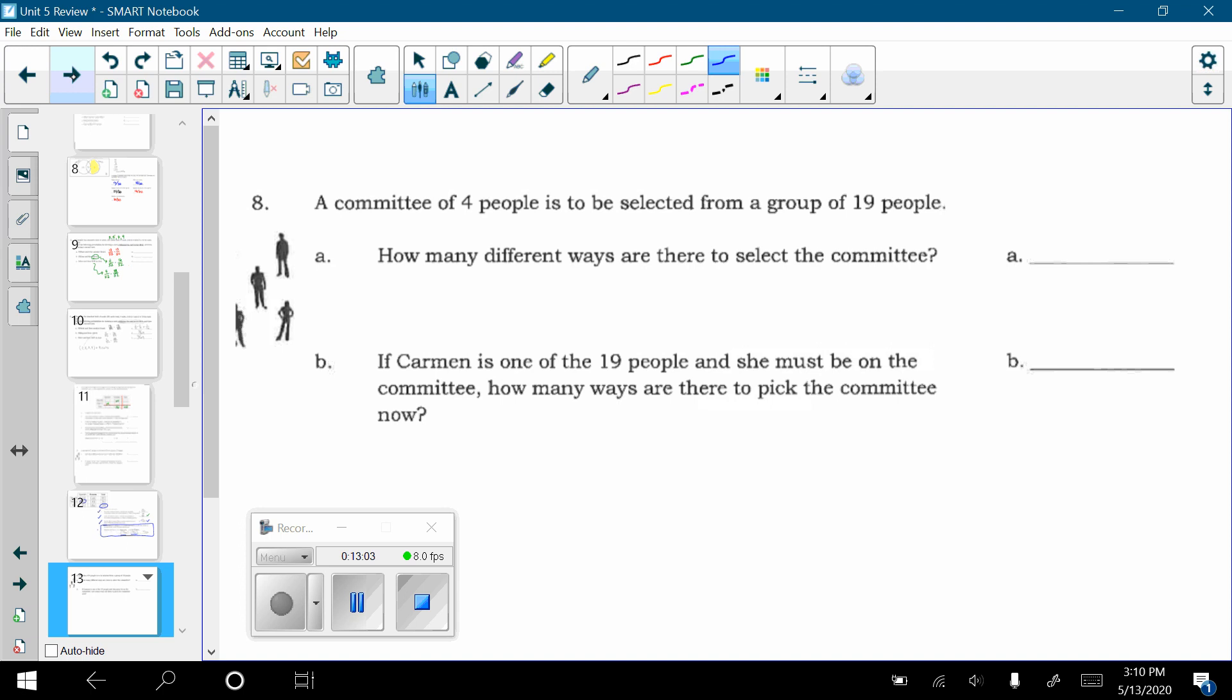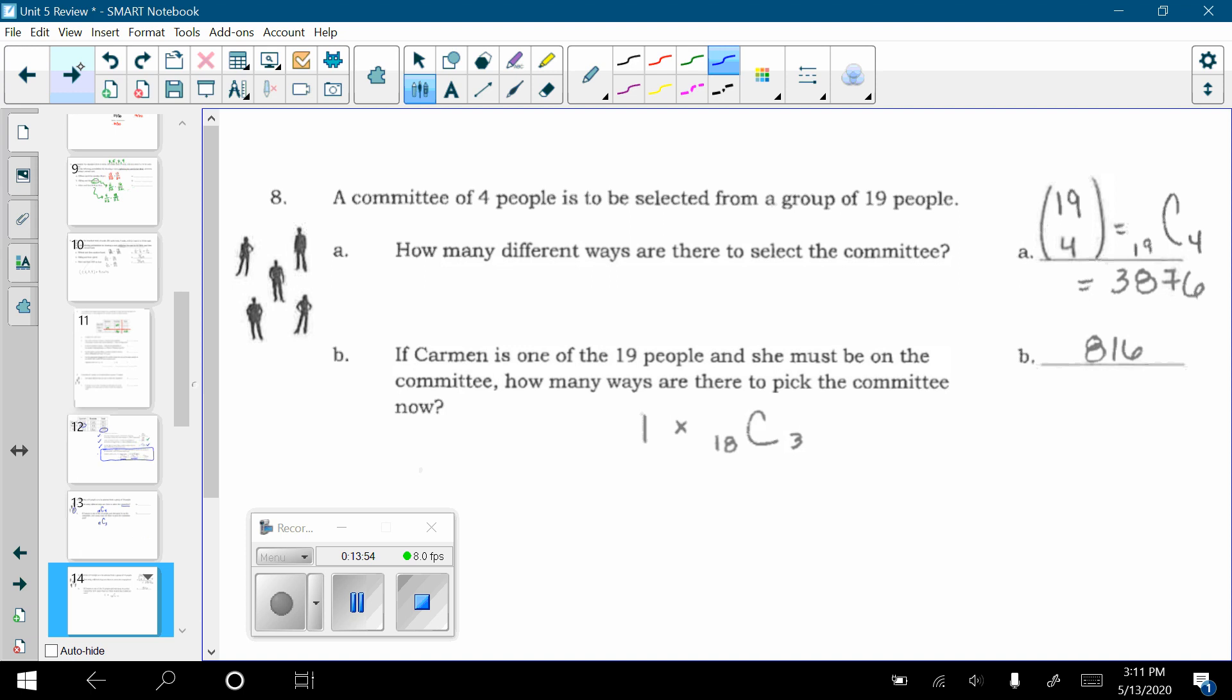Question eight says a committee of four people is selected from a group of 19 people. So, I have this picture over here, and it clearly doesn't show 19 people. I was just having to think about like a group of folks. Okay? So, how many ways are there to select a committee? Now, if I'm picking a committee, does order matter? Not really. It's not like I'm assigning like your first, your second, your third, your fourth. It's not lining something up. It's just a group or a cluster. So, I would say here this is 19 choose four or 19 C4. And then part B says if Carmen has to be one of the 19 people, and she has to be on the committee, how many ways are there to pick the committee now? So, let's say that's Carmen. So, now there's one fewer person. So, that would be 18, and we are going to only pick three more because we already have Carmen. So, those are my answers over here. This notation is just a way that you might see 19 C4 written. It's just a different way of writing it.